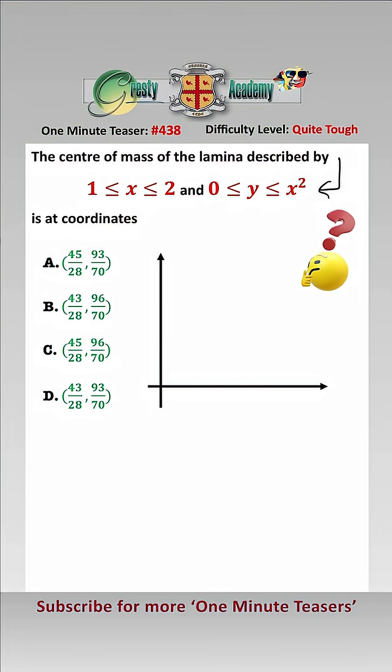So let's have a look at this lamina. We need to draw y equals x squared like that and here is x equals 1 and here is x equals 2 and so therefore it is this area here.